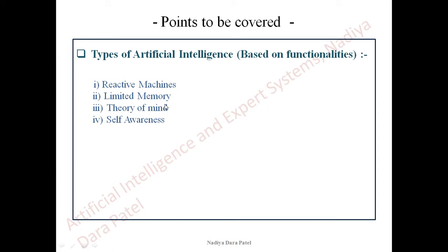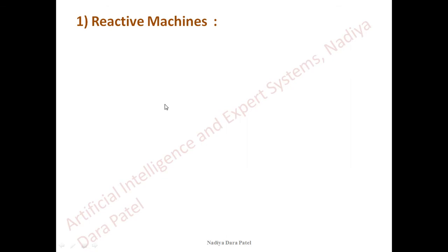Let us get started. In this lecture we will go through the first two types of Artificial Intelligence: Reactive Machines and Limited Memory. Let us understand what exactly reactive machines are all about.